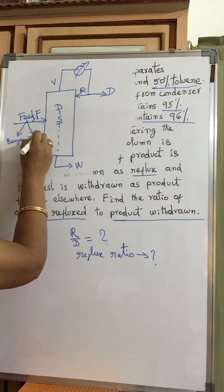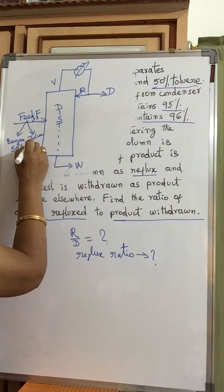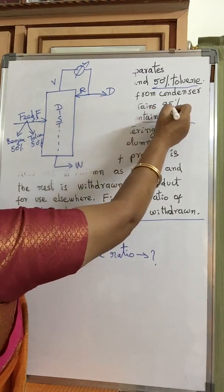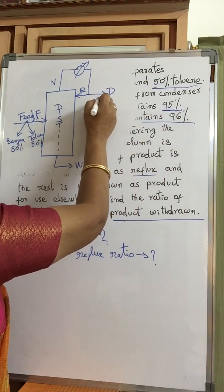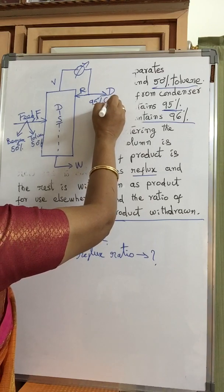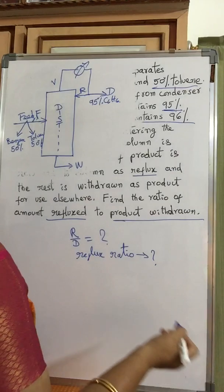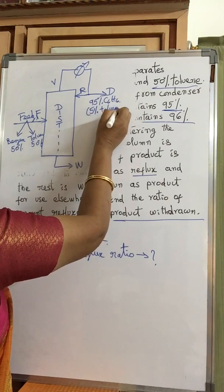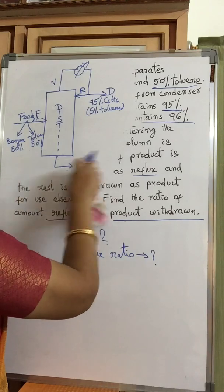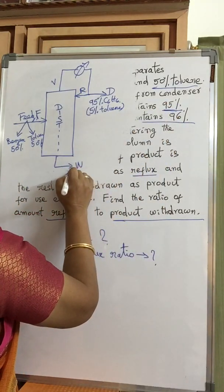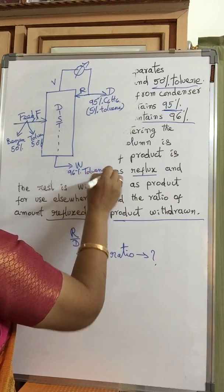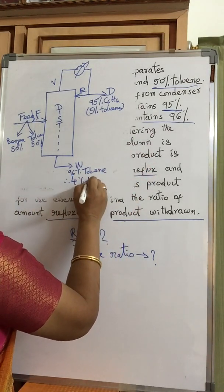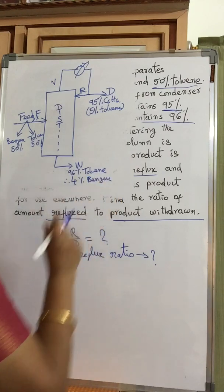Benzene is 50% and toluene is also 50% in the feed. The distillate contains 95% benzene, meaning the remaining 5% is toluene. The bottom product contains 96% toluene, meaning the remaining 4% is benzene. This is the composition given.